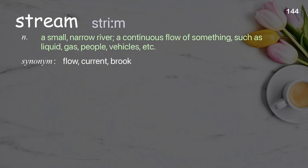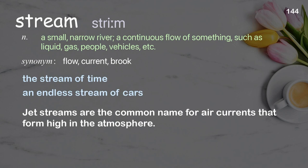Stream: A small, narrow river; a continuous flow of something, such as liquid, gas, people, vehicles, etc. Examples: The stream of time. An endless stream of cars. Jet streams are the common name for air currents that form high in the atmosphere.